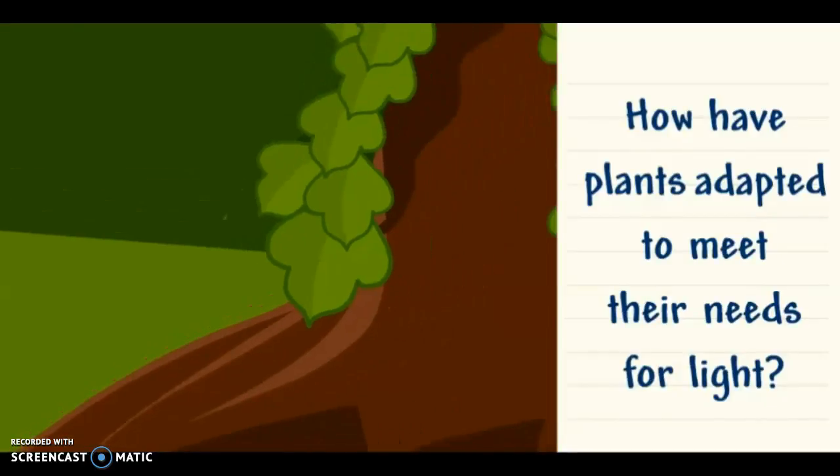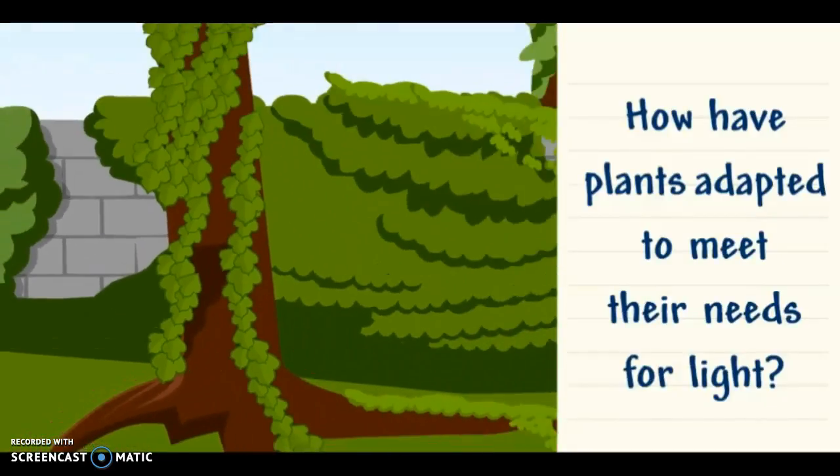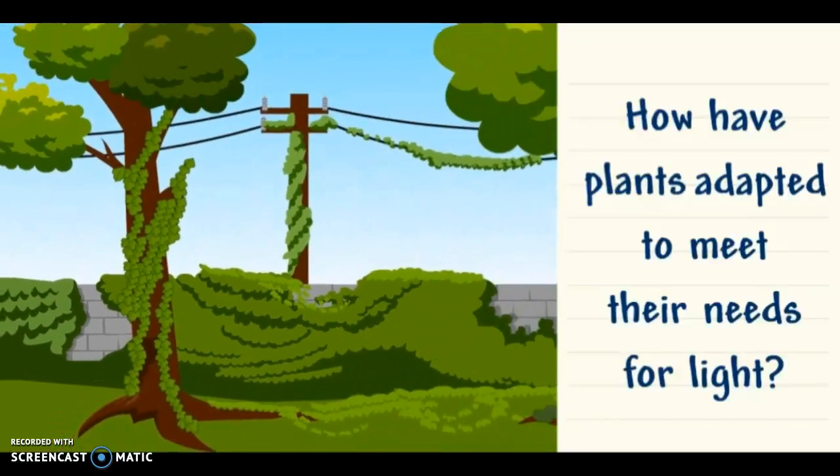Kudzu is a vine that can grow really quickly. It can climb up tall trees so it can get out of the shade and reach sunny areas.